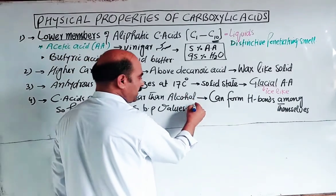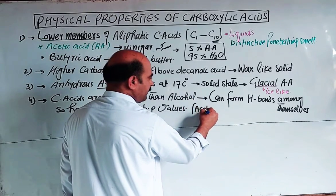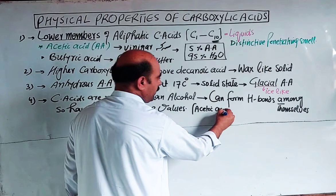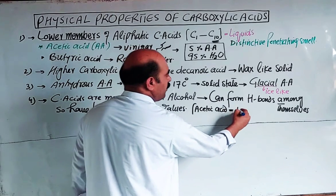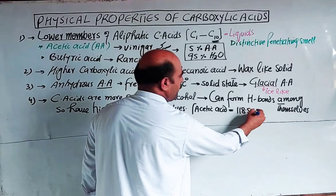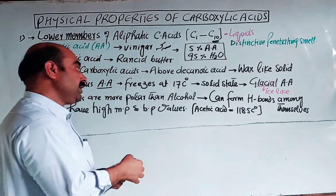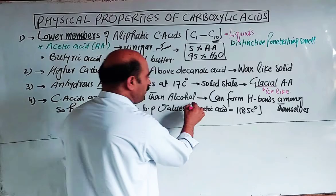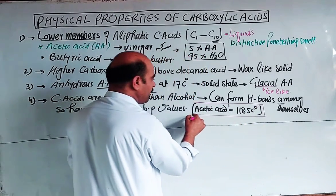Acetic acid has a boiling point of 118.5 degrees Celsius due to hydrogen bonding. Now let us look at dimer formation through hydrogen bonding.